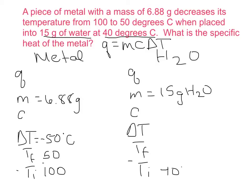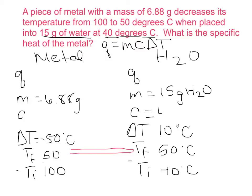The T final for both the metal and the water must be the same, so T final for the water is also 50 degrees Celsius. T final minus T initial gives a change in temperature of 10 degrees Celsius for the water. The specific heat of water is known to be 4.18 joules per gram degree Celsius, so we have enough information to calculate q of water.